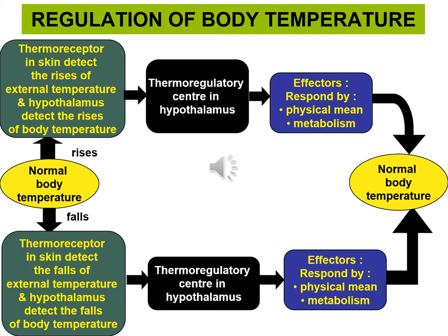This is how the regulation of body temperature works — the negative feedback mechanism. When the body temperature rises above 37 degrees Celsius, the thermoreceptors in the skin detect the rise in external temperature. At the same time, the hypothalamus detects the rise in body temperature, and the thermoreceptors send nerve impulses to the thermoregulatory center in the hypothalamus.